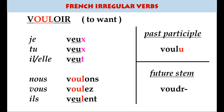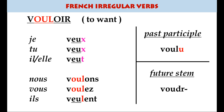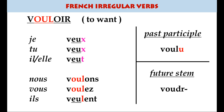Vouloir is another really useful verb that does something odd in the nous and vous forms. Je veux, tu veux, il veut — a very common x, x, t pattern — then nous voulons, vous voulez, and back again to ils veulent, with an l in there as well.